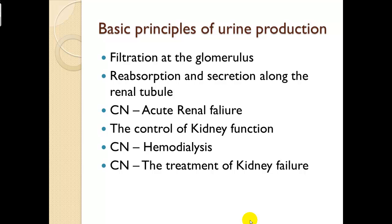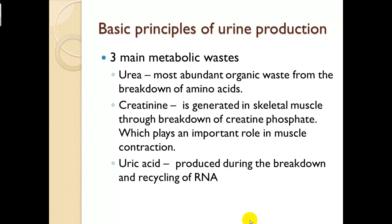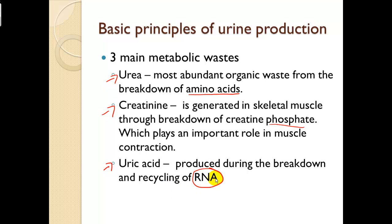Basic principles of urine production: filtration at the glomerulus, reabsorption and secretion along the renal tubule. Three main metabolic wastes occur in urine: urea, creatinine, and uric acid. Urea is the most abundant organic waste, coming from the breakdown of amino acids. Creatinine is generated in skeletal muscle through the breakdown of creatinine phosphate, which plays an important role in muscle contraction. Uric acid is produced through the breakdown of recycled ribonucleic acid.